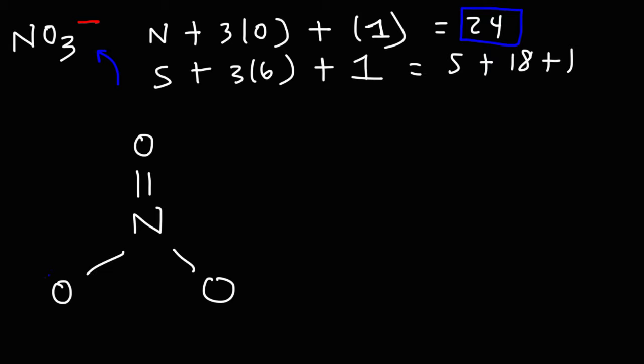Now anytime oxygen has one bond, it's going to have three lone pairs because it wants to obey the octet rule. It wants to have eight electrons around it. Anytime it has one bond, it's going to have a minus charge. Now when oxygen has two bonds, it's going to have two lone pairs and it's going to be neutral in charge.